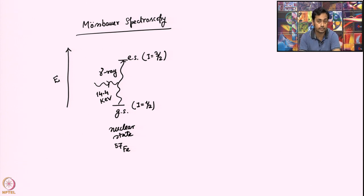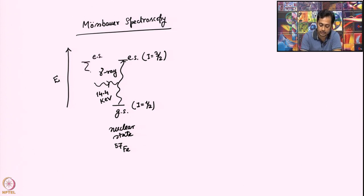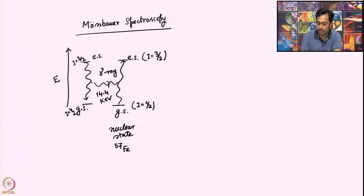How do we generate that energy? That kind of energy is generated from an Iron-57 system which is already in an excited state and coming back to its ground state of I = 1/2, releasing gamma ray energy which will be absorbed by the sample system. This is my sample, and this is my source, which is also Iron-57.